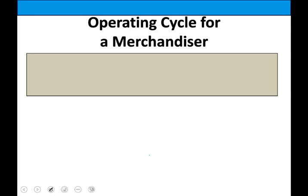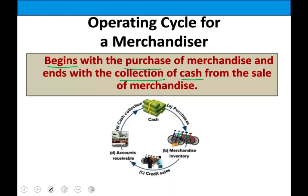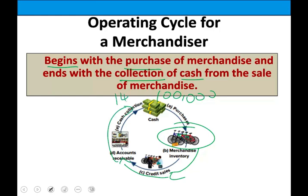The other term we need to learn about is the operating cycle of a merchandiser. What's the operating cycle? The operating cycle starts with cash and ends up with more cash. It begins with the purchase of merchandise inventory and ends with the collection of cash. For example, you start with $100,000 invested in bicycles, you advertise, put them in your store, sell them on credit, collect the cash, and end up collecting $145,000.